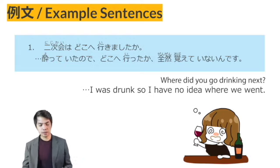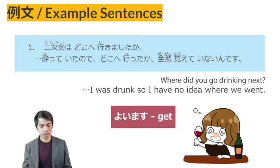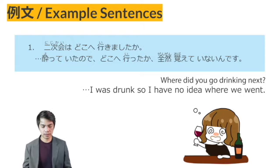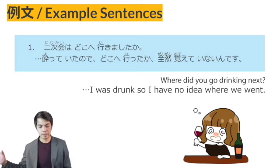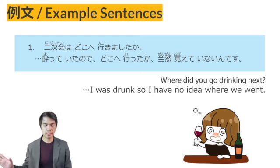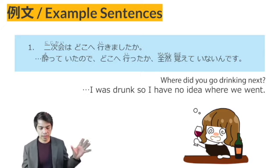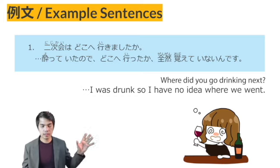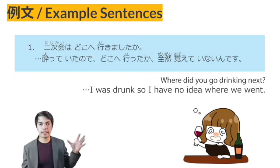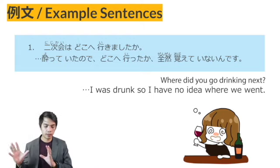Nijikai wa doko e ikimashita ka? — Where did you go? Next: Yotte ita no de — because I was drunk — doko e itta ka? Zenzen oboite inai n desu. Doko e itta ka — from the interrogative sentence doko e ikimashita ka, 'where did I go?' Zenzen plus a negative verb means 'not at all,' so zenzen oboite inai n desu — I don't remember anything.